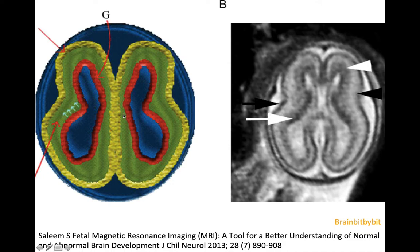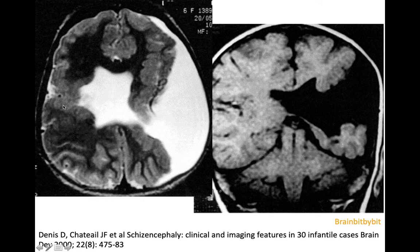What happens in schizencephaly is that there is a vascular insult in the germinal matrix, causing these neuronal stem cells to die, and then you get a cleft, and because it happens so early, the cleft is lined by gray matter. If the cleft is wide, as in this case, it's called an open-lip schizencephaly, and if it's smaller, it's called a closed-lip schizencephaly.